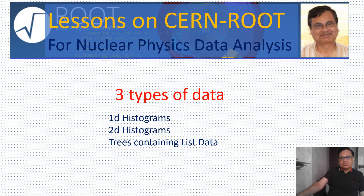In the analysis work you will be dealing with three types of data essentially. You have to work with one-dimensional histograms and two-dimensional histograms. There are also three-dimensional histograms but we won't generally be needing those for simplified nuclear physics data analysis. The data is actually consisting of Root trees, which contain the list data.